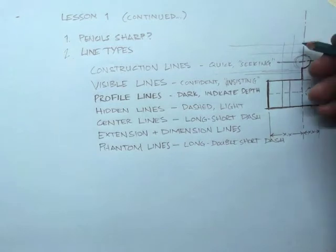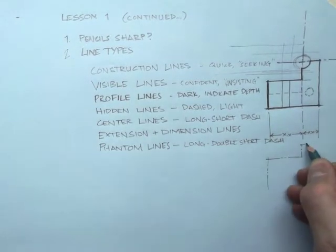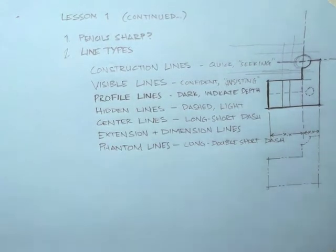Phantom lines are a long double short dash and they are how we show something that isn't in a certain location. The phantom line indicates displacement or motion.